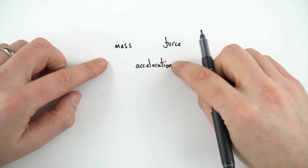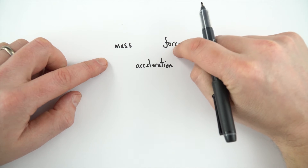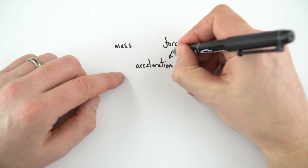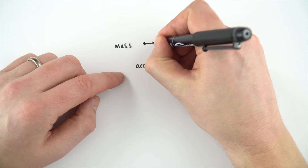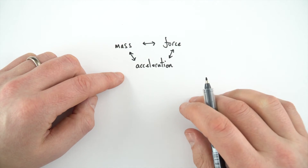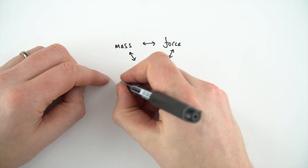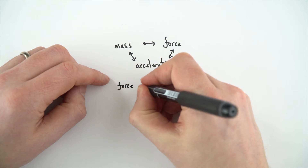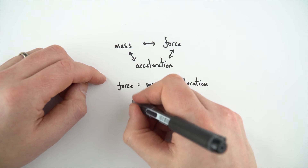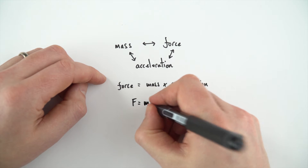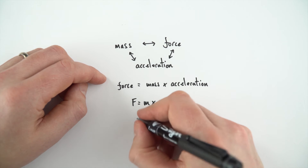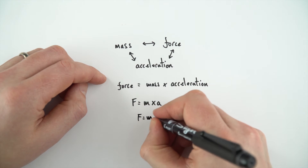These three quantities here are all linked. If you keep one the same and vary something else, it's going to affect the third. When you have these kinds of things which are all linked together, we can often write an equation to show how that works. In this case, force is equal to mass times acceleration. We can also write this in symbols: f is equal to m times a, and the shorthand way of writing this is f equals ma.